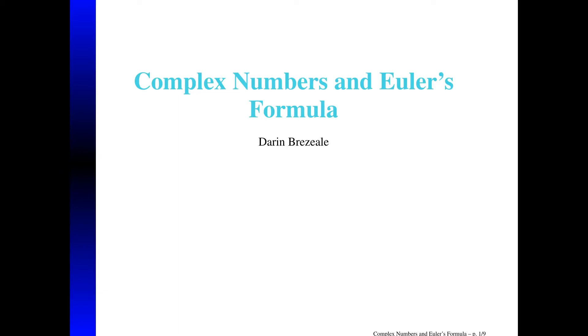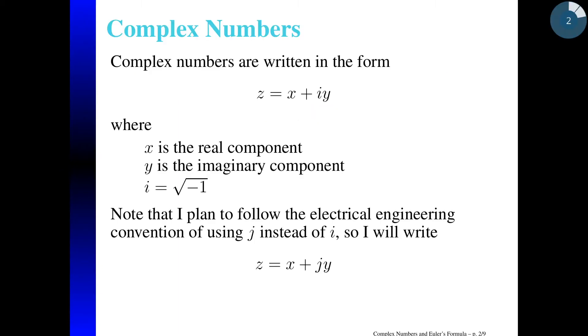All right, let's review complex numbers and Euler's formula. So recall that Z, a complex number, is typically written as X plus IY, where X is the real component, Y is the imaginary component, and I is the square root of minus 1. So together, IY forms an imaginary number.